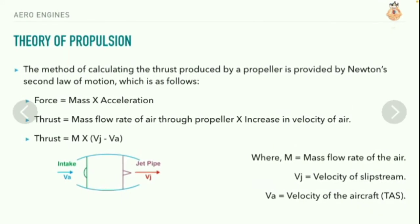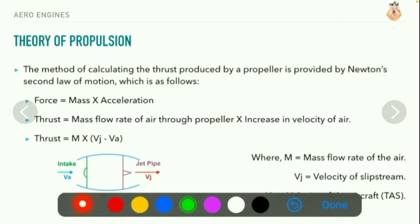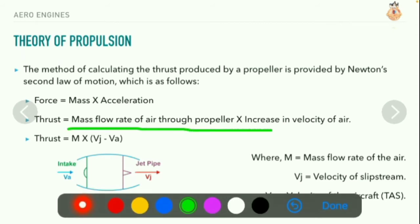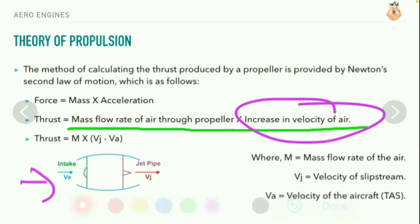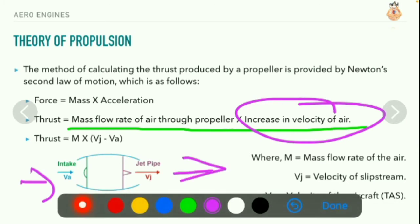The method of calculating the thrust produced by a propeller is provided by Newton's second law of motion, which states that change in momentum is directly proportional to the acting force. Here, force is nothing but thrust. Thrust is given as mass flow rate of air times increase in velocity, where increase in velocity is the difference between intake velocity and jet pipe velocity.